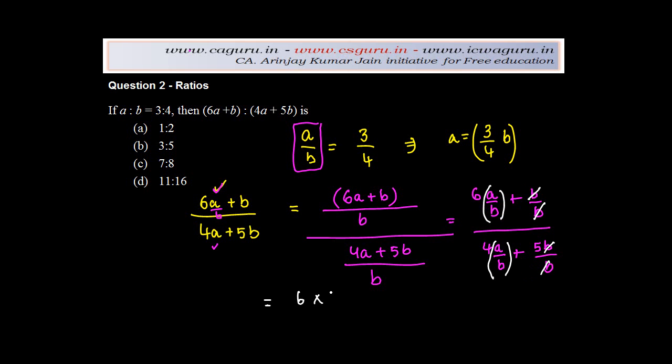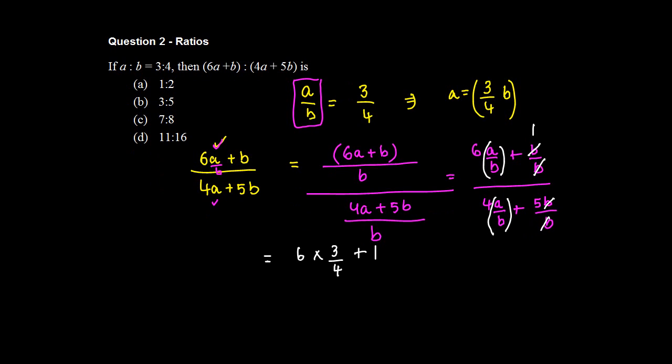Or in other words, 6 into 3 by 4 because a upon b is 3 upon 4 plus 1. Please note that even when this cancelled out, you have 1 over here. You can't ignore this. Divided by 4a upon b, 4 times 3 by 4 plus 5. This 4 cancels with this. So you're left with 3, 3 plus 5 gives you 8.